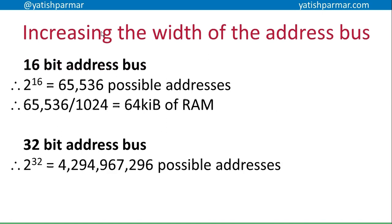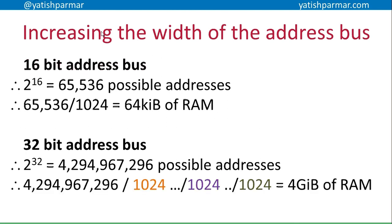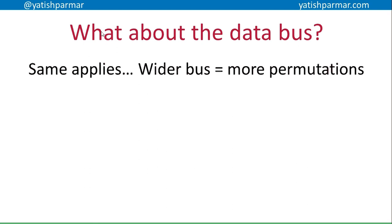With a 32-bit bus, 2 to the 32 gives me approximately 4 billion 294 million. Dividing by 1024 to get kilobytes, then by 1024 again to get megabytes, and 1024 again gives me 4 gigabytes of RAM — assuming each location is storing a byte of data.